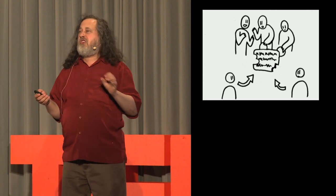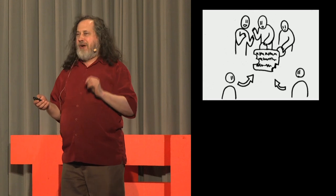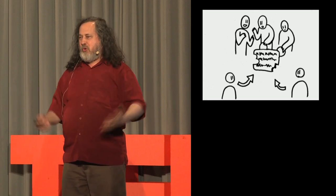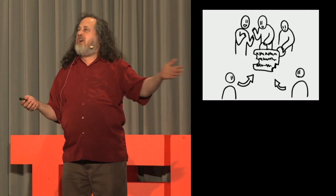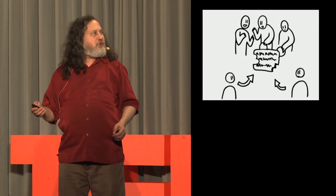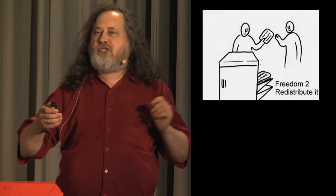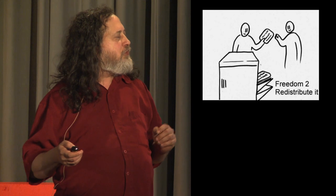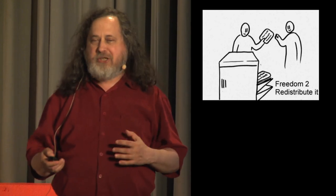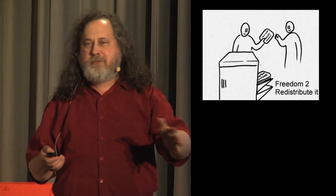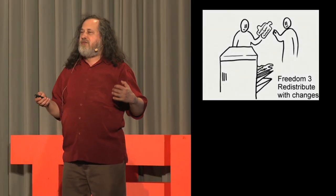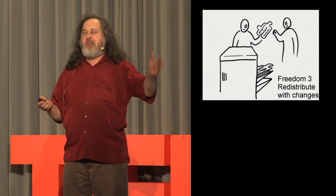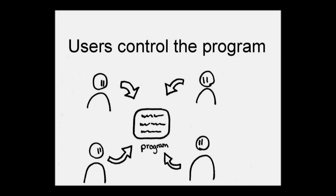Of course, in the group some of them are programmers — they're the ones who actually write the changes, but they're doing it as part of the group for what the group wants. The group doesn't have to be everybody; others can use it some other way. Collective control requires two more essential freedoms. Freedom two is the freedom to redistribute exact copies — to make copies and give them away or sell them. Freedom three is similar but for your modified versions. If you do have these freedoms, then it's free software and the users control the program.